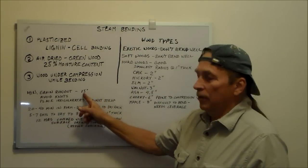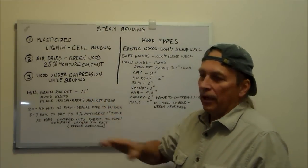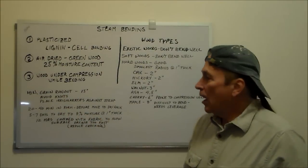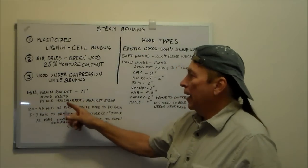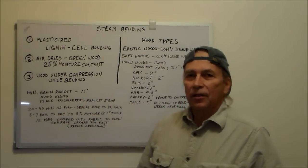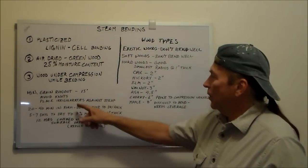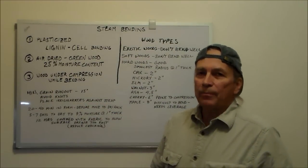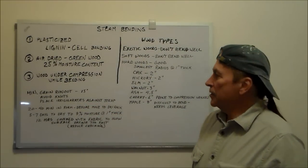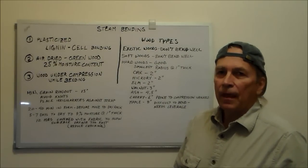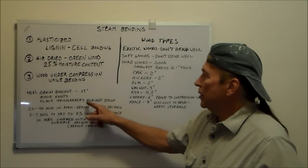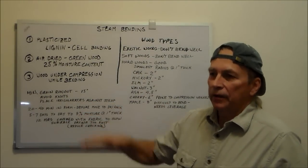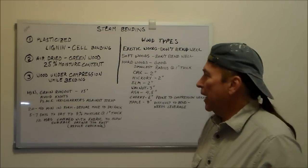You need fairly straight grain without that runout. Avoid knots and whatever imperfections. Any of the irregularities that you may have—no wood is perfectly straight—you want to put those irregularities up against your metal strapping, which is the backing. This keeps that edge of the wood from stretching, so there will be almost no movement at the edge where the metal backing is.